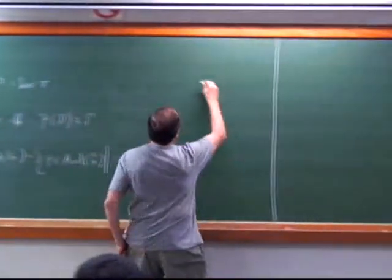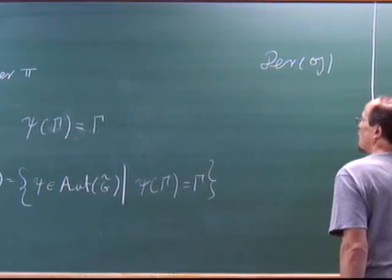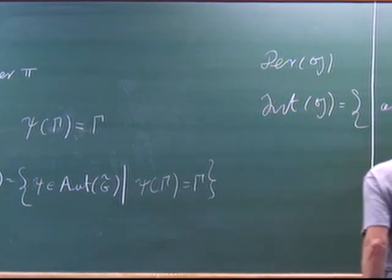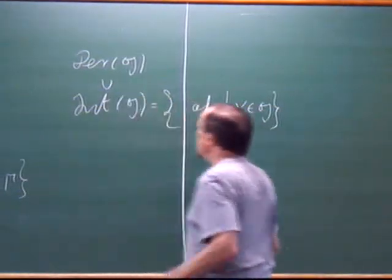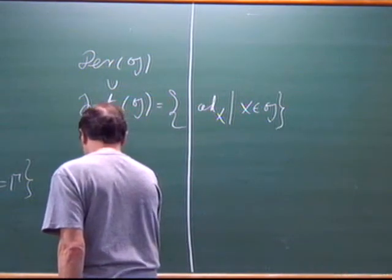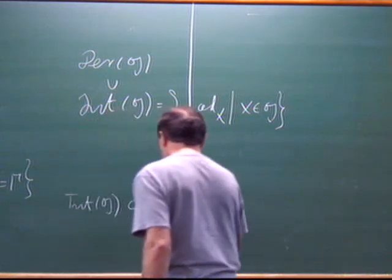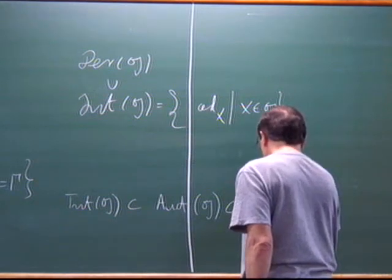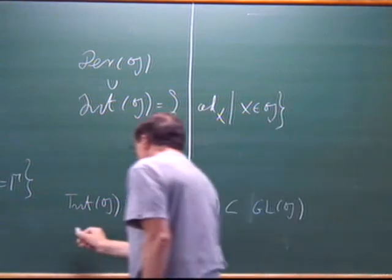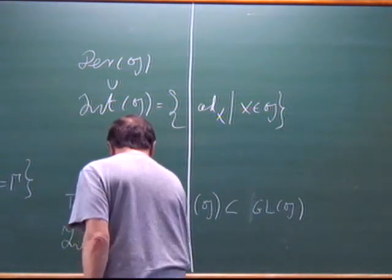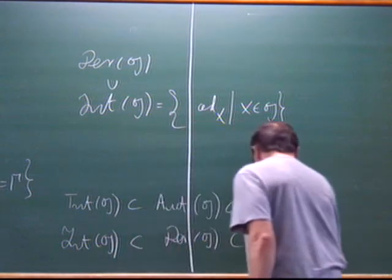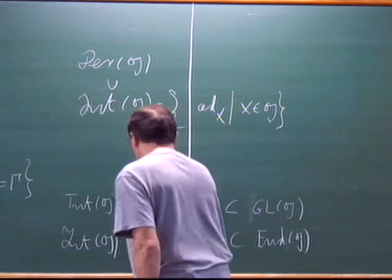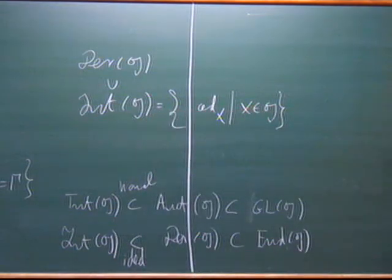What else did we have? We had derivations and inner derivations. Inner derivations were of the form ad(X). This sits inside all the derivations. Then we had a sequence of corresponding Lie groups and Lie algebras: Int(G) contained in Aut(G), contained in the automorphism group of GL(G). And a corresponding sequence of Lie algebras: inner derivations contained in derivations, contained in the endomorphism algebra. This was normal, and this was an ideal.